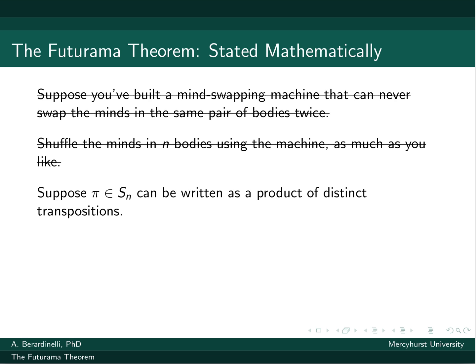A transposition is a swap of just two things. So we saw cycles before that had three, four, five things in the cycle. A transposition would be a cycle with just two things in it.